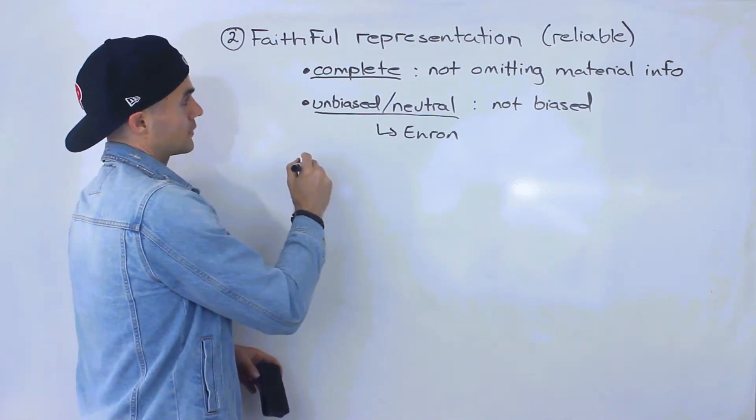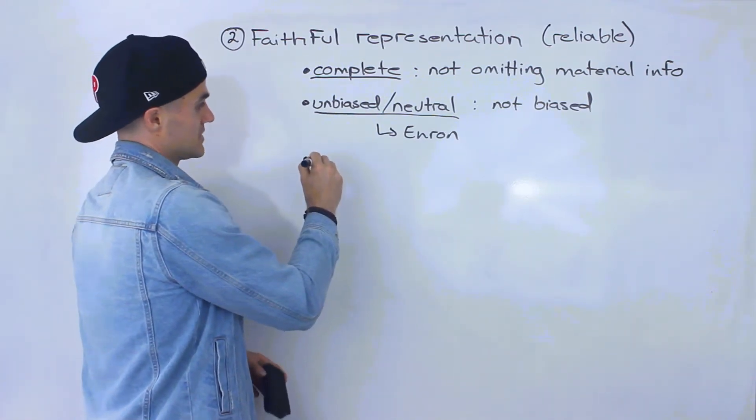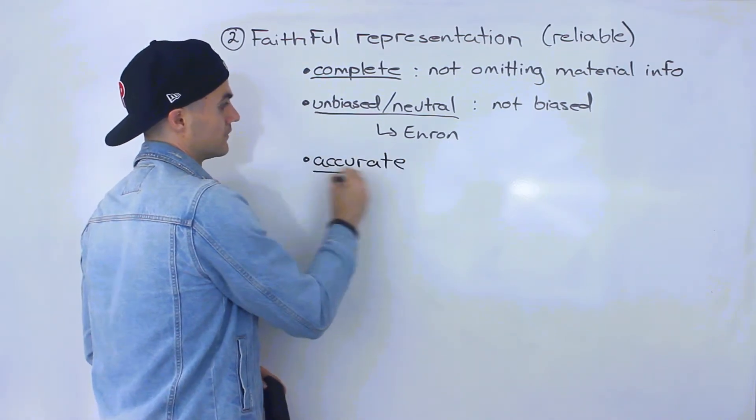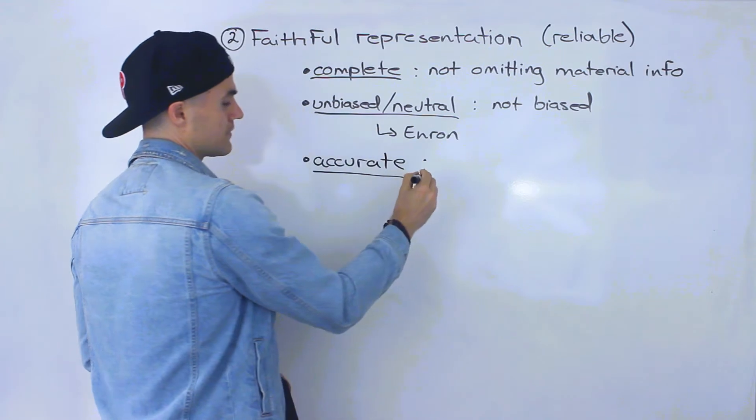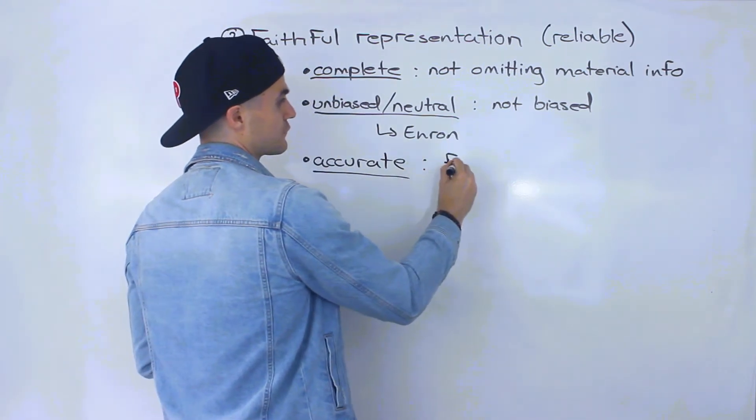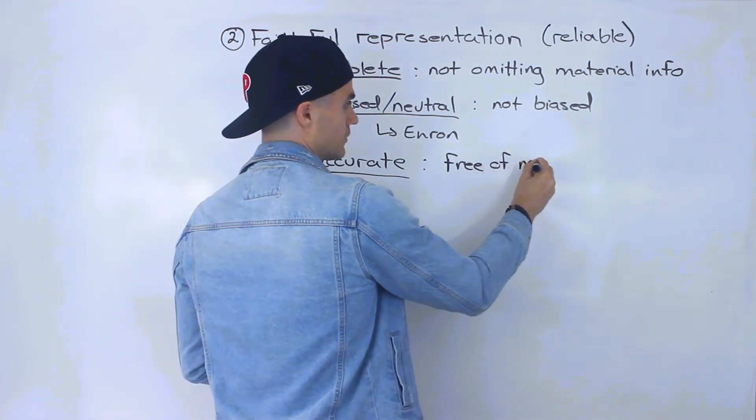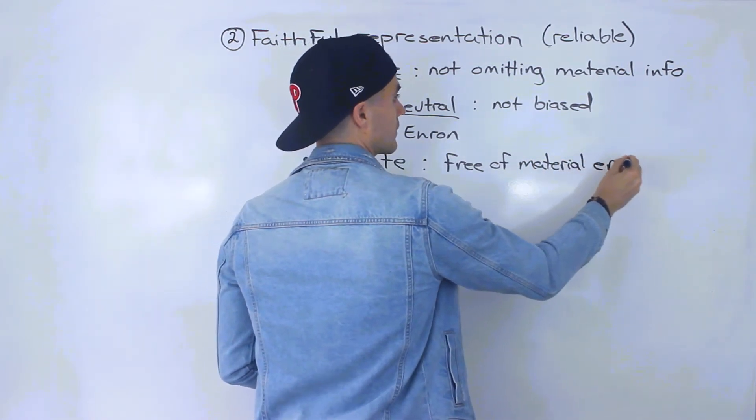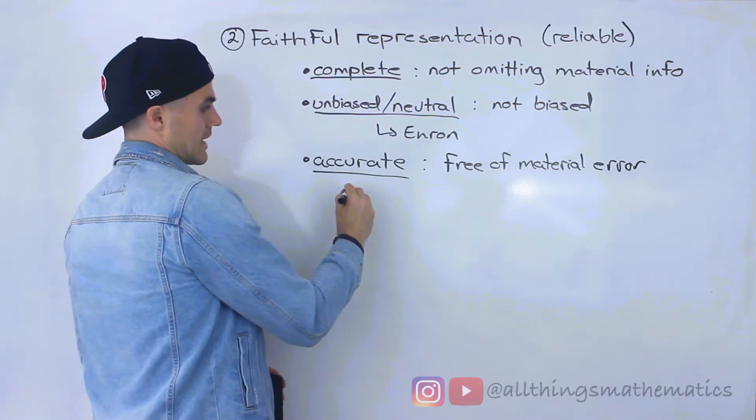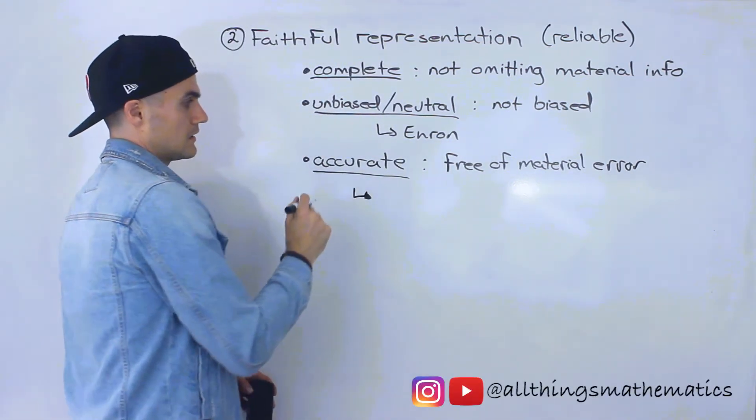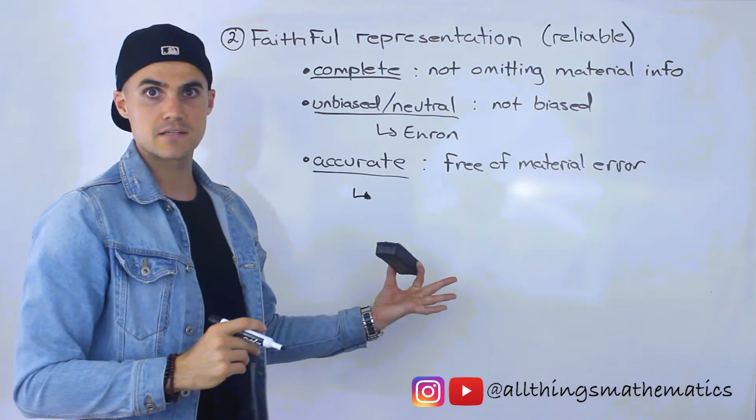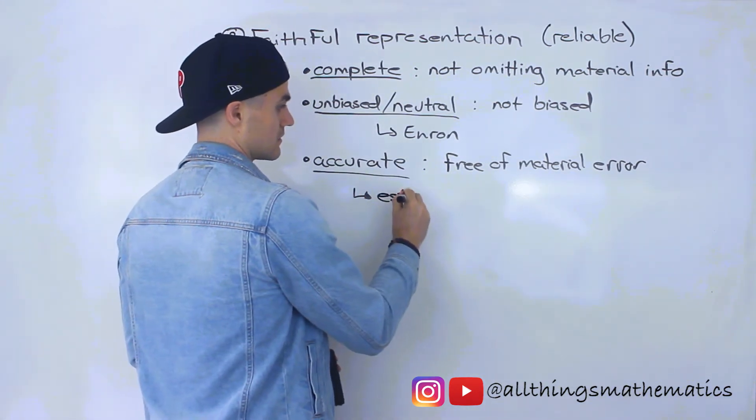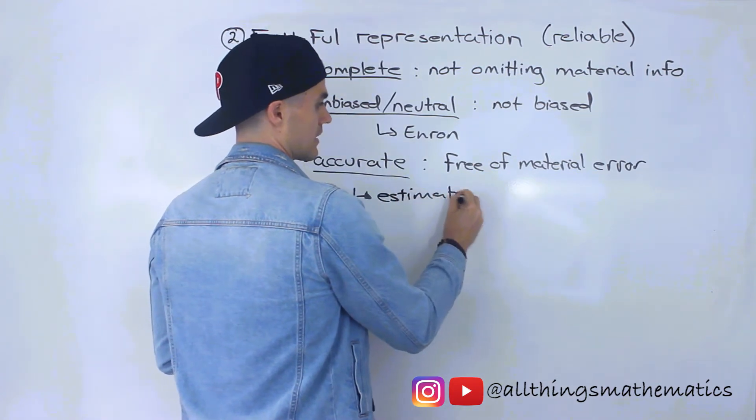And then the third characteristic of faithful representation is that information is accurate. And what this means is that it is free of material error. Now, I want to make a side note on this. It doesn't mean that estimates can't be used. Sometimes estimates have to be used. So estimates can be used.